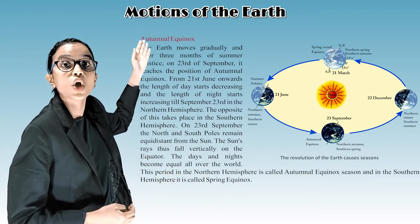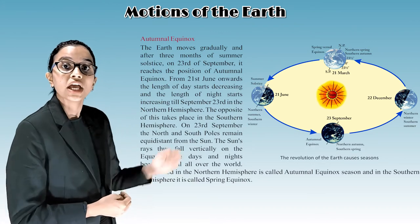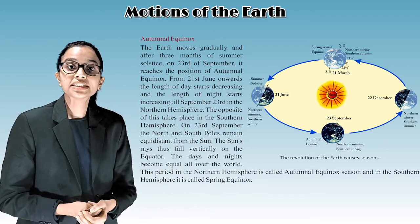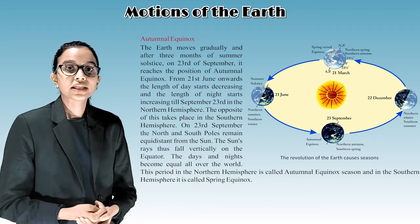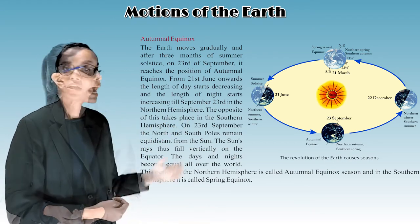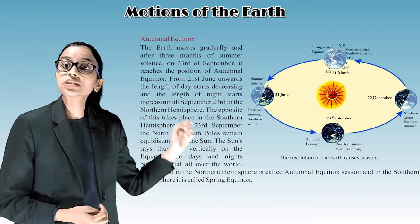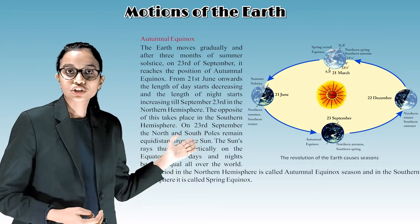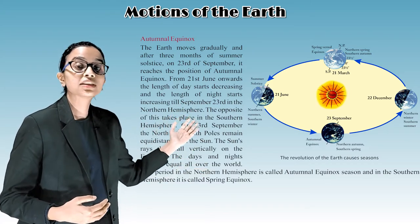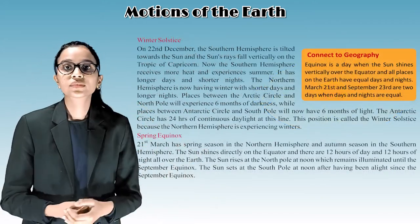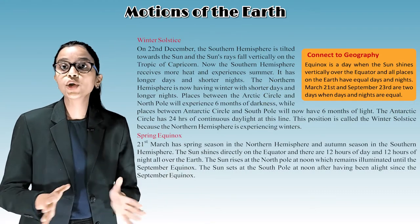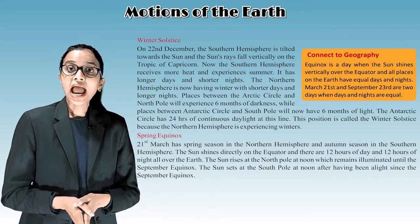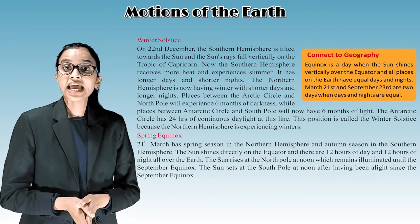This period in the northern hemisphere is called autumnal equinox, and in the southern hemisphere it is called spring equinox. Looking at the diagram: at the top is the north pole — spring vernal equinox, showing northern spring and southern autumn. On the west side is summer solstice — northern summer and southern winter. On the east side is northern winter and southern summer. At the bottom is autumnal equinox — northern autumn and southern spring. This revolution of the earth causes seasons. Equinox is the day when the sun shines vertically over the equator and all places have equal day and night. March 21st and September 23rd are the two days when days and nights are equal.